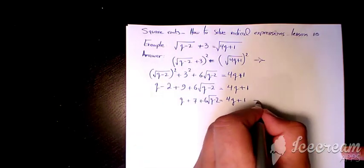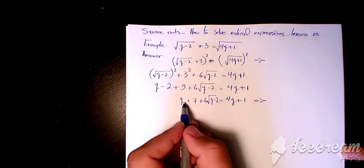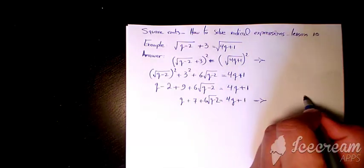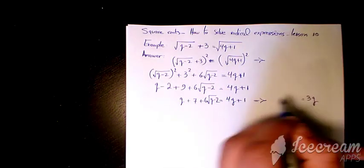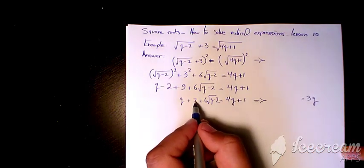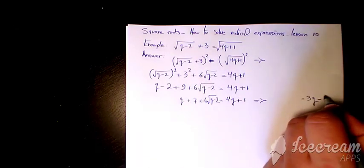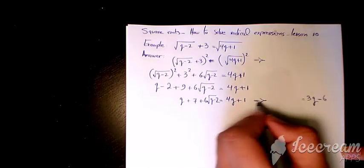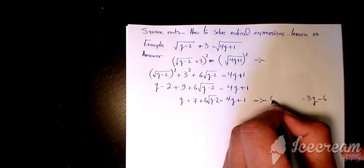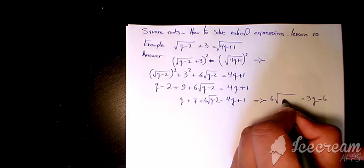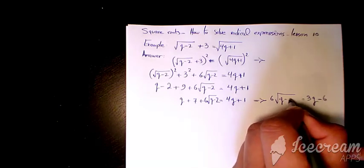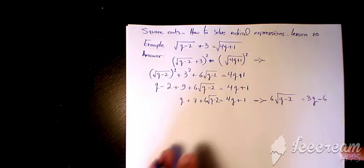Then you can bring the q terms together — it's going to be 3q on the right — and here you have 1 minus 7 on the left, which equals 6 times root of (q minus 2).